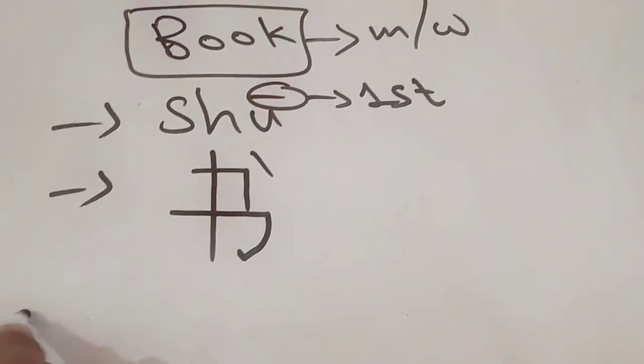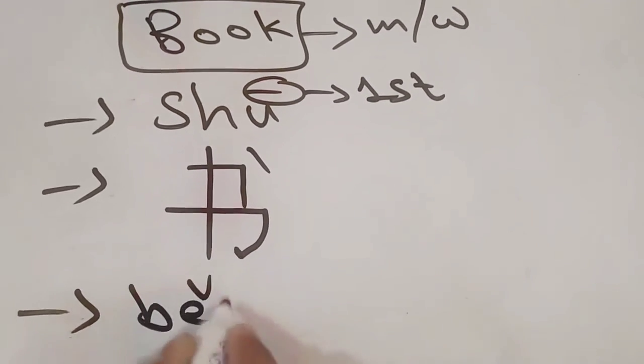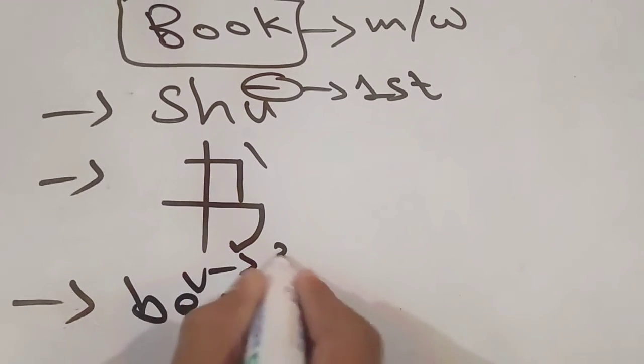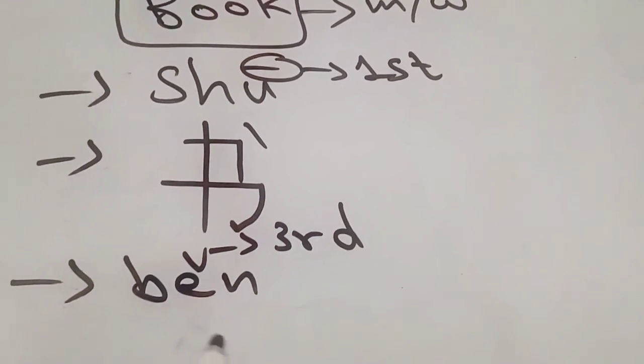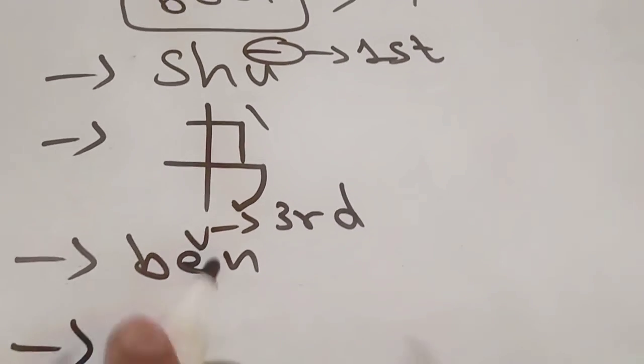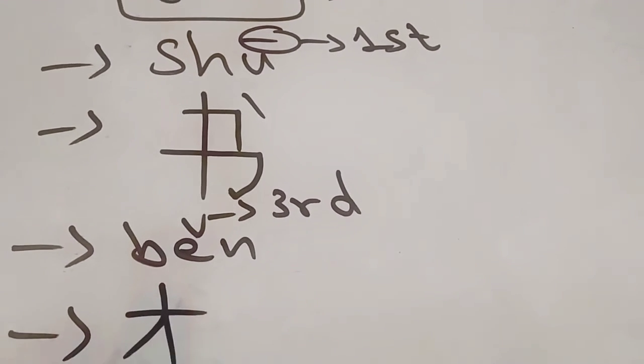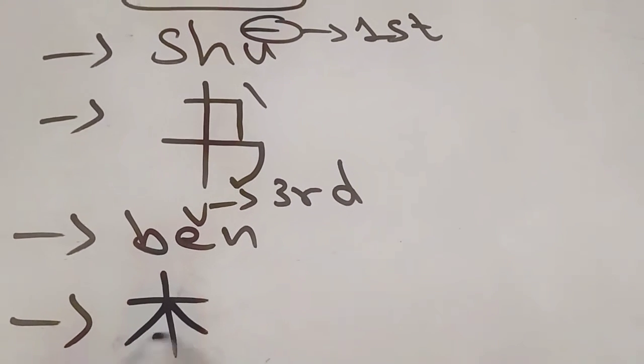The measure word of book is known as běn. This is third tone. Pronunciation again: běn. How to write the word běn in Chinese character: step one, step two, step three, step four, and step five.